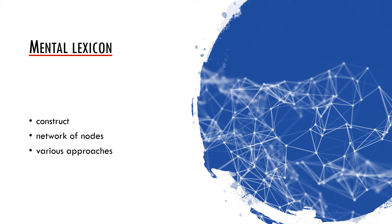Typically the mental lexicon is conceived as a network of nodes. This means that words are represented as nodes and they are mutually interconnected based on various features. There are various approaches to mental lexicon and we will present a few of them here. However, it is always necessary to think of the mental lexicon as a theoretical construct. Various models may thus focus on different features of the mental lexicon because they are grounded in a certain theory or a framework which emphasizes certain things and ignores others.